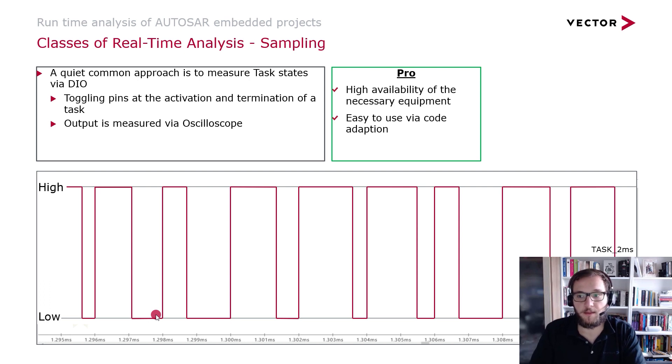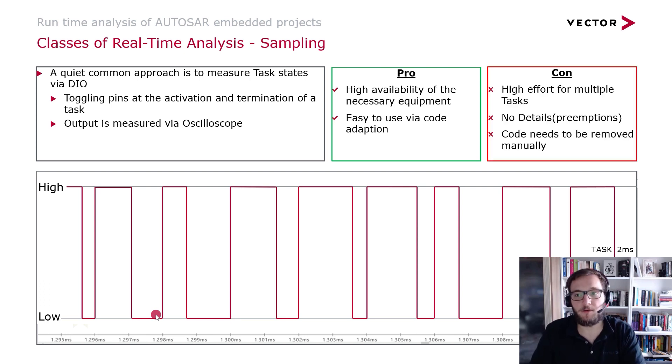Of course with this easiness there also comes a downside. The effort that you have in order to instrument the tasks and also in order to record these data changes as shown here with the oscilloscope is getting higher the more tasks you want to analyze. If you do it only for one task it's fairly easy, but since you have hundreds of tasks in a complex system it can be quite a high effort to instrument all of them and also to measure them.